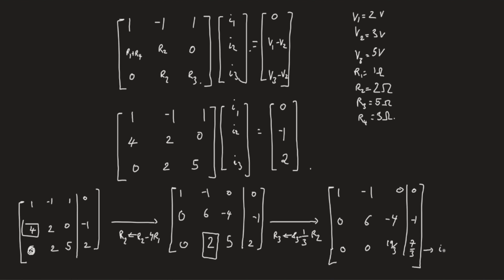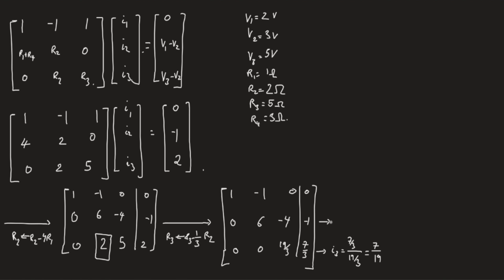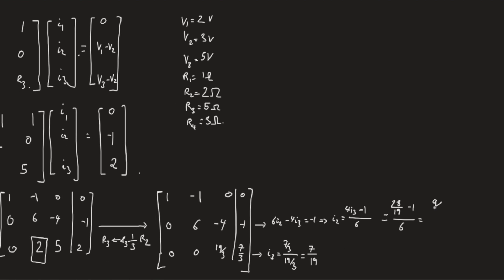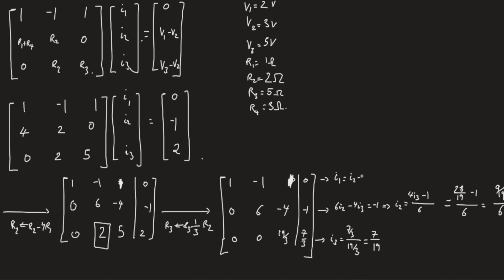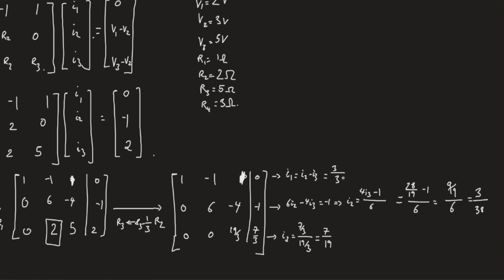Solving for I3 from the last row, we get I3 is 7 over 3 over 19 over 3, which is 7 over 19. Solving for I2, we get 6 I2 minus 4 I3 is minus 1, which means that I2 is (4 I3 minus 1) over 6, that is (28 over 19 minus 1) over 6, which is 9 over 19 over 6. Let's solve for I1. So I've got a small mistake here. This is 1 and was never changed, so this guy is 1 and this guy is a 1. Sorry, my bad. So in this equation, we get I1 is I2 minus I3, that is 3 over 38 minus 7 over 19, which is (3 minus 14) over 38, and that is minus 11 over 38.